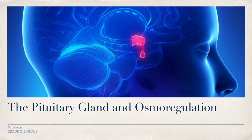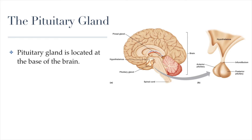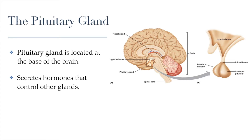Let's start by taking a look at the pituitary gland and its role in a process called osmoregulation. The pituitary gland produces a lot of hormones. It is located in the base of our brain at the very bottom of a section called the hypothalamus, which is the control center of a lot of different parts of our brain and it also produces some hormones itself. The pituitary gland is often called the master gland because it produces many hormones that control other glands.